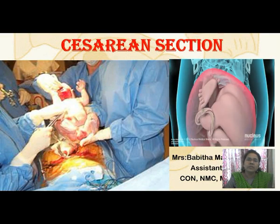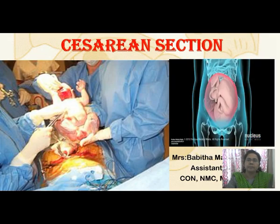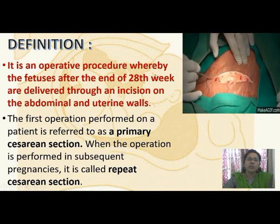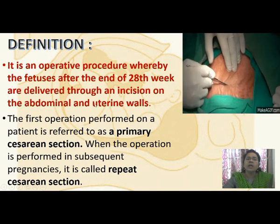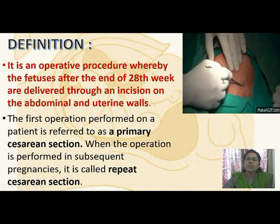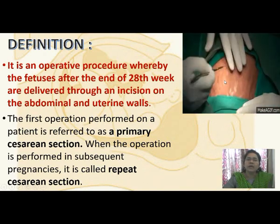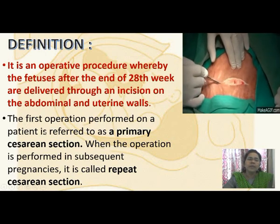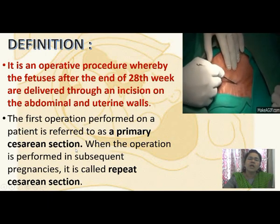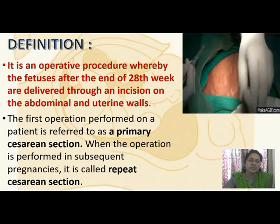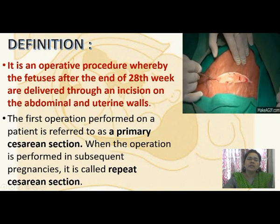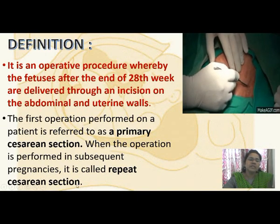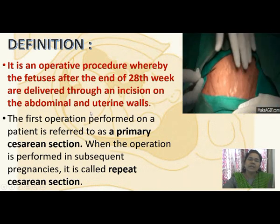Today we are going to discuss the topic caesarean section. It is an operative procedure whereby the fetuses after the end of the 20th week are delivered through an incision on the abdomen and uterine walls. The first operation performed on a patient is referred to as the primary caesarean section. When the operation is performed in subsequent pregnancies, it is called a repeated caesarean section.